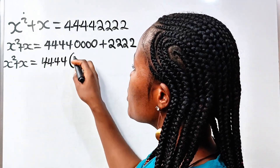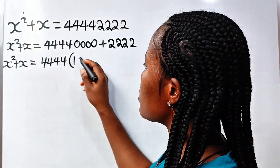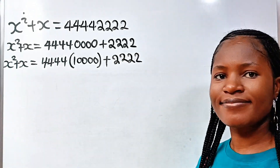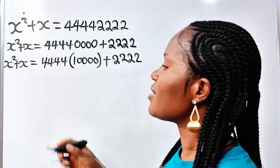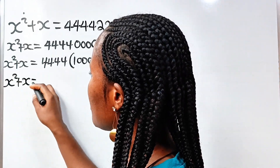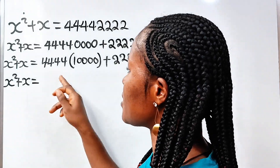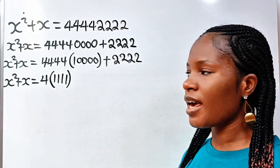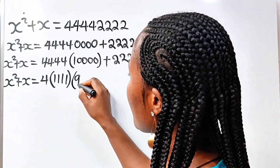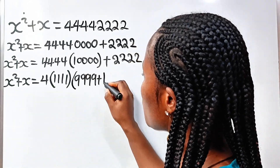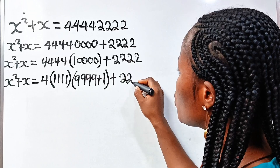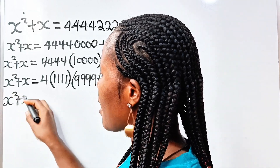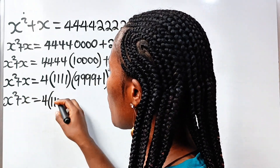So x squared plus x equals 4444 multiplied by 10000 — that is, four zeros — plus 2222. This can be expressed as 4 multiplied by 1111, then multiplied by 9999 plus 1, then plus 2222.